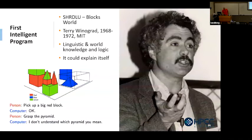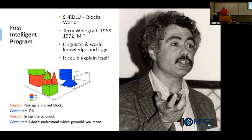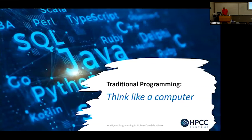This idea that we can build machines and they're going to learn language on their own — the first intelligent program, in my opinion, is SHRDLU from Blocks World by Terry Winograd from MIT. It's basically a Blocks World where it has everything about the domain — blocks, colors, shapes, placement. This was back in 1968 to 1972 and had graphics and natural language processing. It could explain itself; you could ask it why it did something, and it would answer until it said 'you asked me to.' If a computer knows everything about the world it operates in, it will be intelligent.